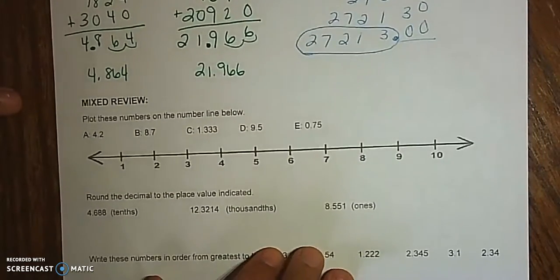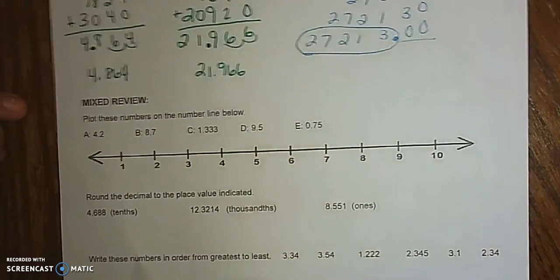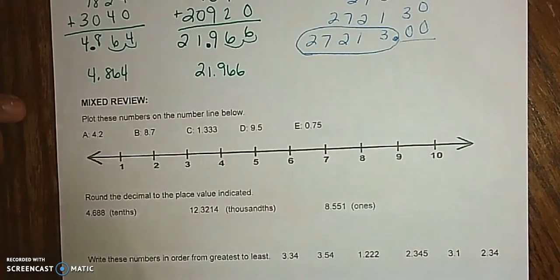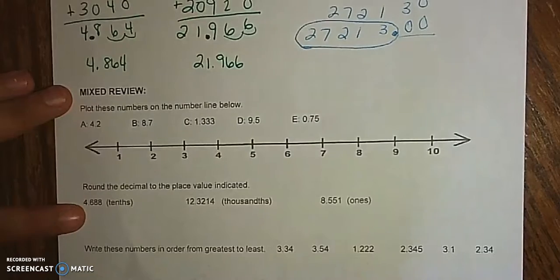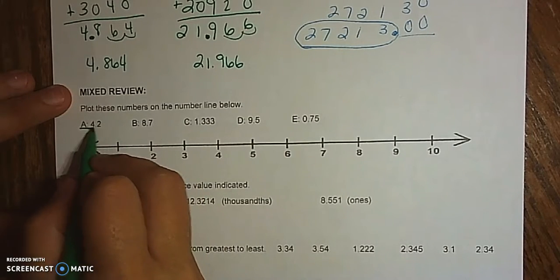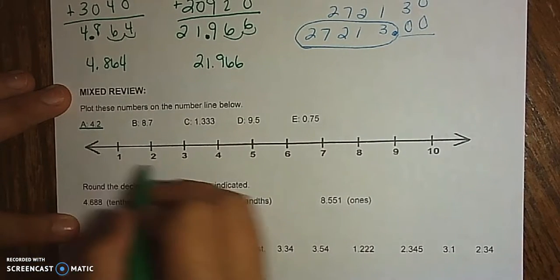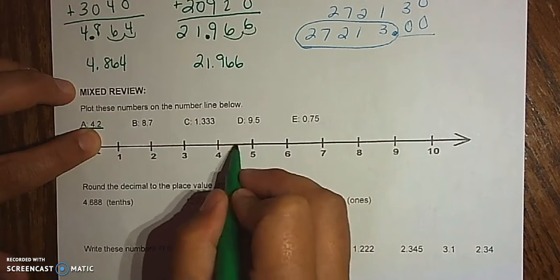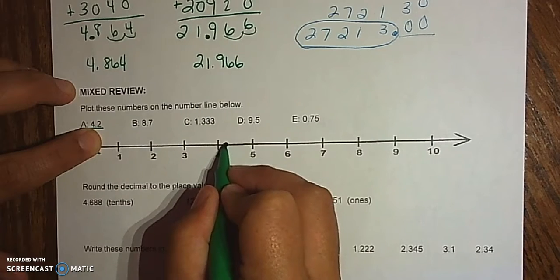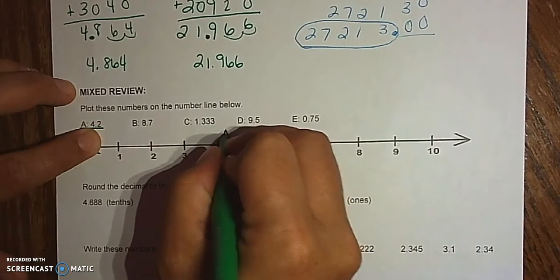Now let's go down to mixed review. This goes back to lessons 2-3. It says plot these numbers on the number line below. A is 4.2, so we're going to find the 4, and it's more than 4, but less than 5, so we know we're in here, and it's less than half. So there is my A.